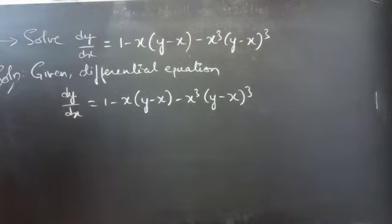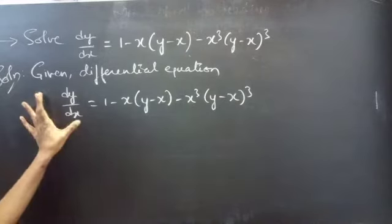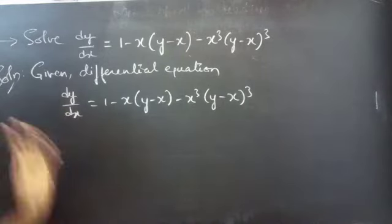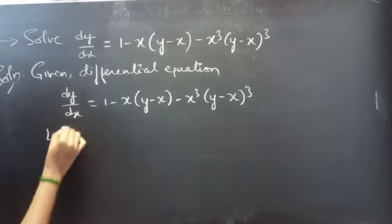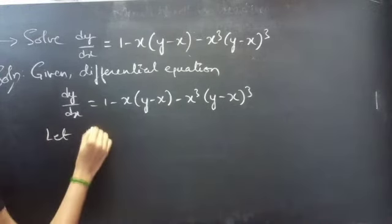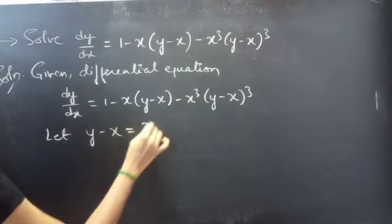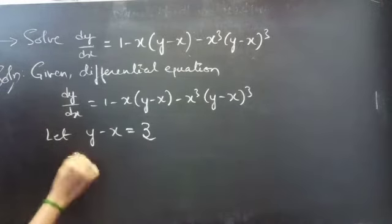So what we'll do is we'll make some substitution and reduce this equation to linear form. Firstly, let y minus x equals some z.